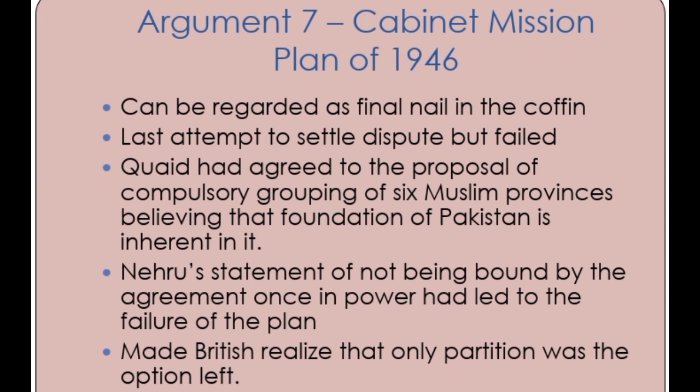The last argument: Moreover, the arrival of the Cabinet Mission in 1946 was the final nail in the coffin — it was the last attempt by the British government to settle differences between Congress and the Muslim League. Though Qaid-e-Azam had agreed to the proposal, saying 'the foundation of Pakistan are inherent in the mission's plan by virtue of the compulsory grouping of six Muslim provinces,' Nehru's statement that Congress would not be bound by any agreement once in power altered the plan. This finally made the British realize that Pakistan was the only viable solution to the Muslim problem, resulting in the arrival of Lord Mountbatten and his Third June Plan for partitioning India.